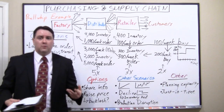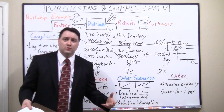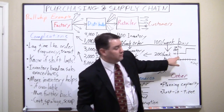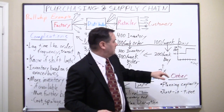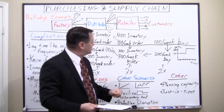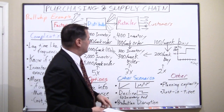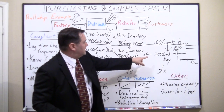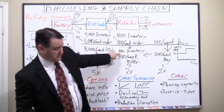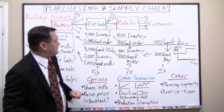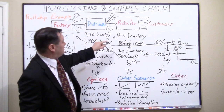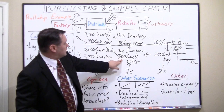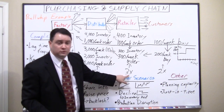Now let's say there's a good review for this product and sales suddenly double. Customers are now buying 200 a week — 2x their original sales. At the retailer level, they brought in 100 but sold 200, so they drew 100 out of inventory, dropping it to 300. Now they need to order 200 to cover sales plus 100 to replenish inventory — so they're ordering 300 a week. They've tripled their requests.